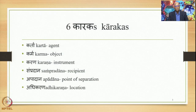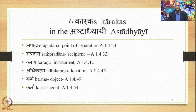These are the six Karakas studied earlier in this particular order: Kartha (agent), Karma (object), Karana (instrument), Sampradana (recipient), Apadana (point of separation), and Adhikarana (location). In Paninian grammar, however, the sequence of these Karakas is different, as shown on this particular slide. First comes Apadana, the point of separation.